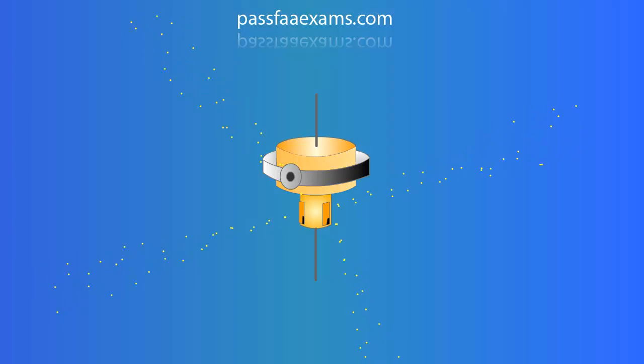As you probably know, precession is a gyroscopic physical law that says that if you apply a force to a gyro, the gyro will respond with the same force but 90 degrees ahead in the sense of rotation of the gyro.